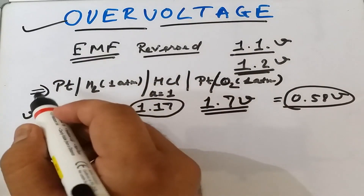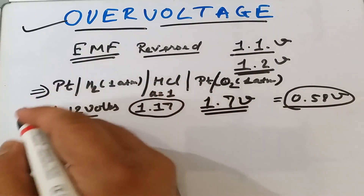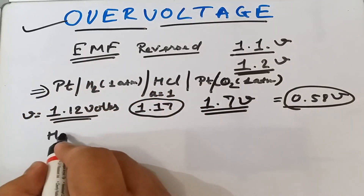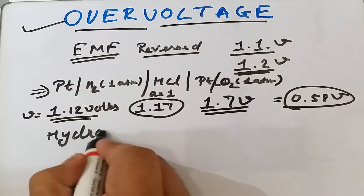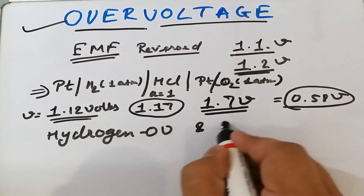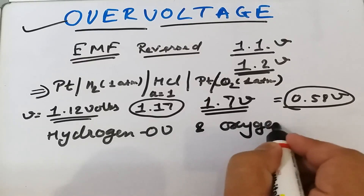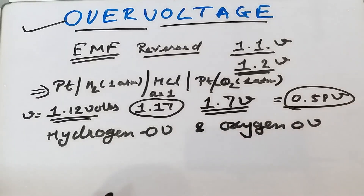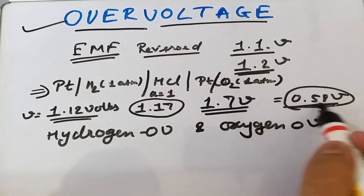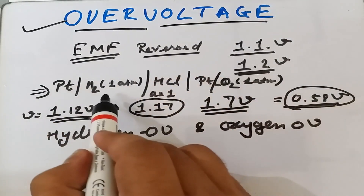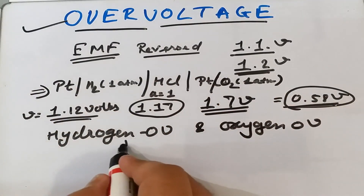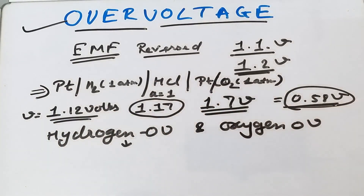Overvoltage can be broadly classified into two categories: one is hydrogen overvoltage, and the second is oxygen overvoltage.